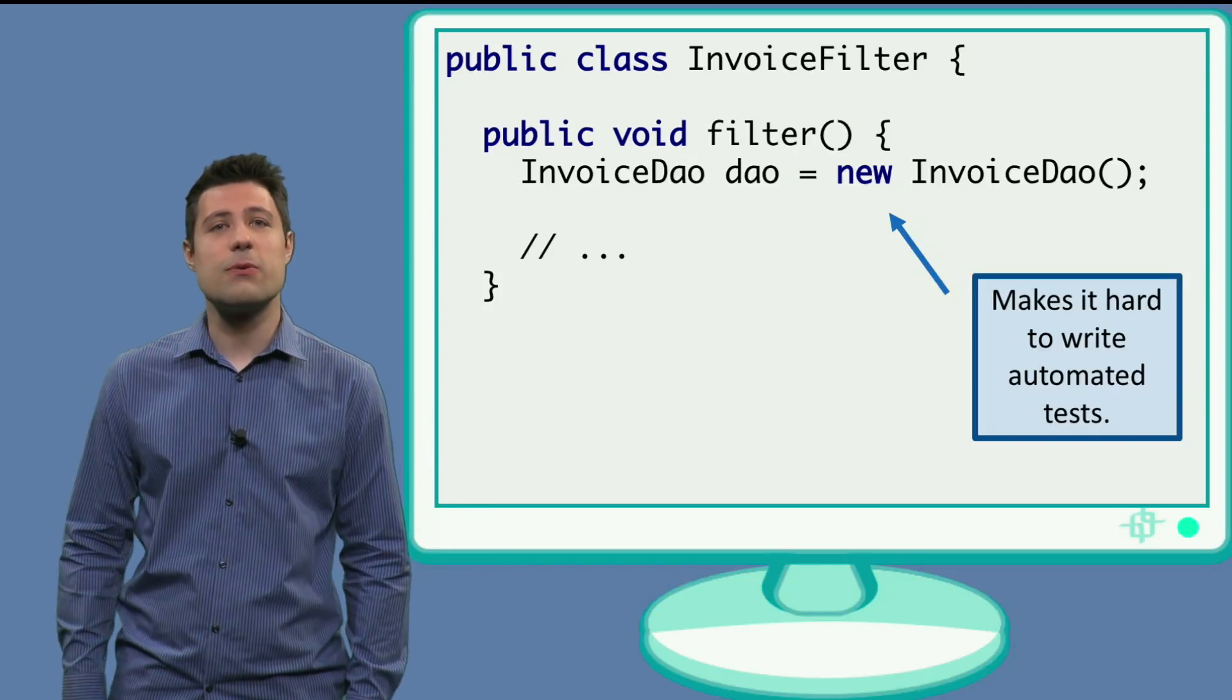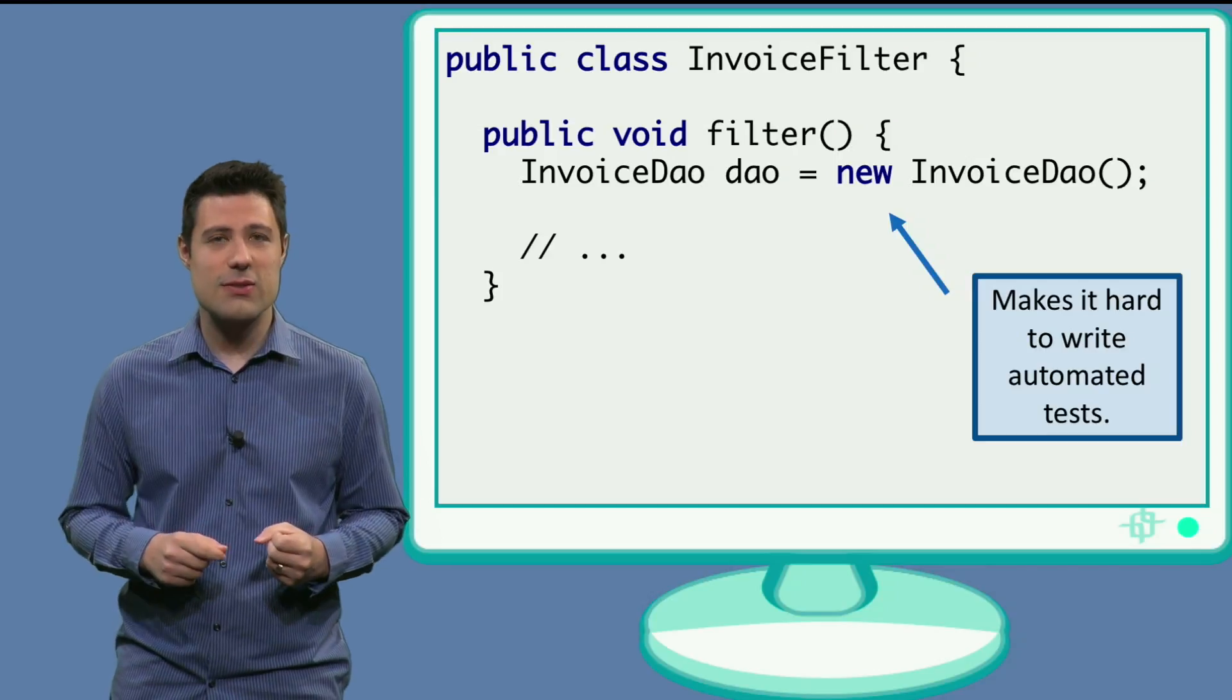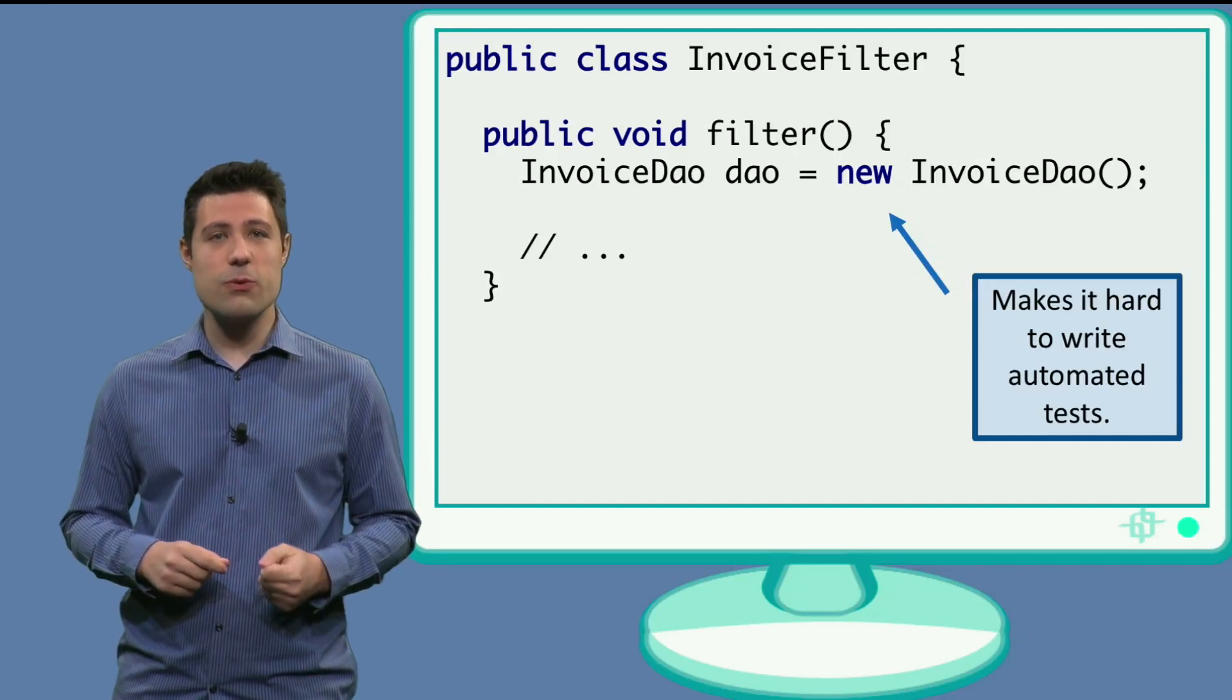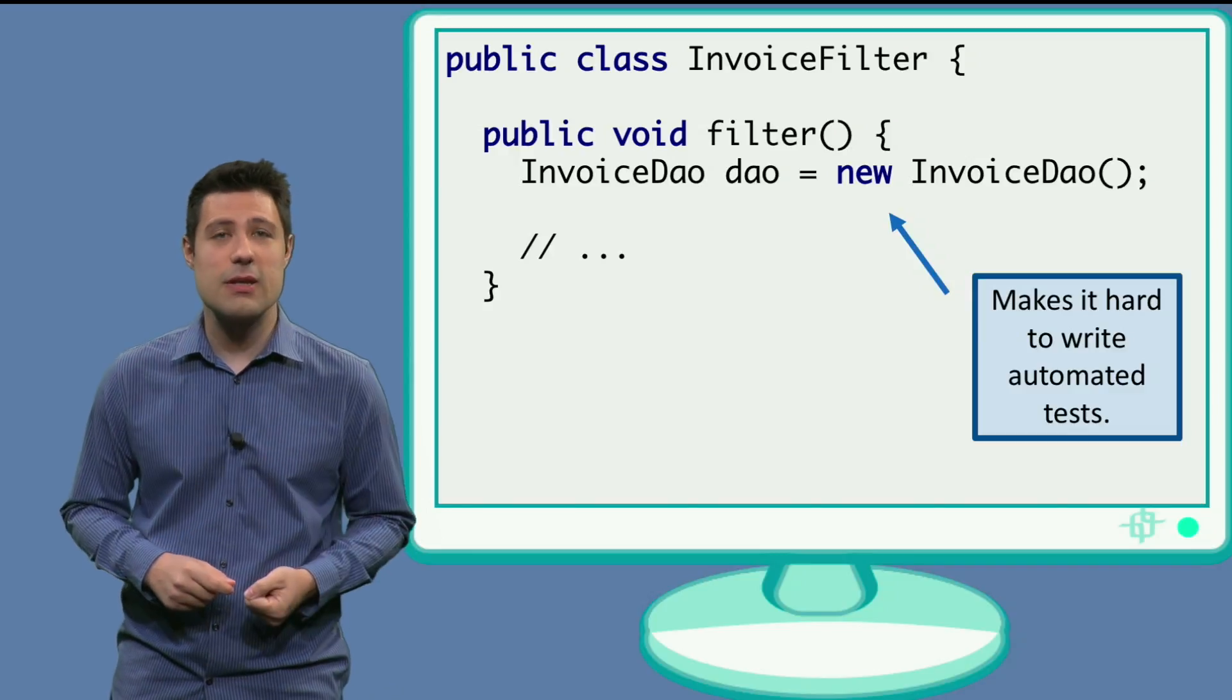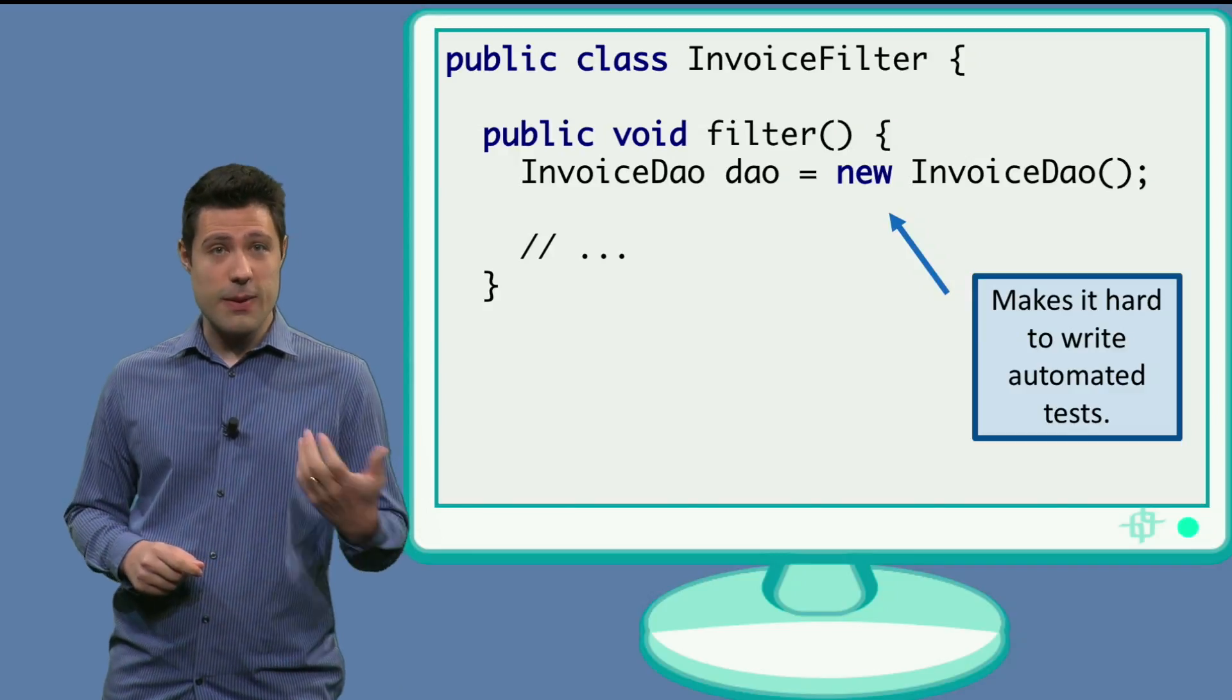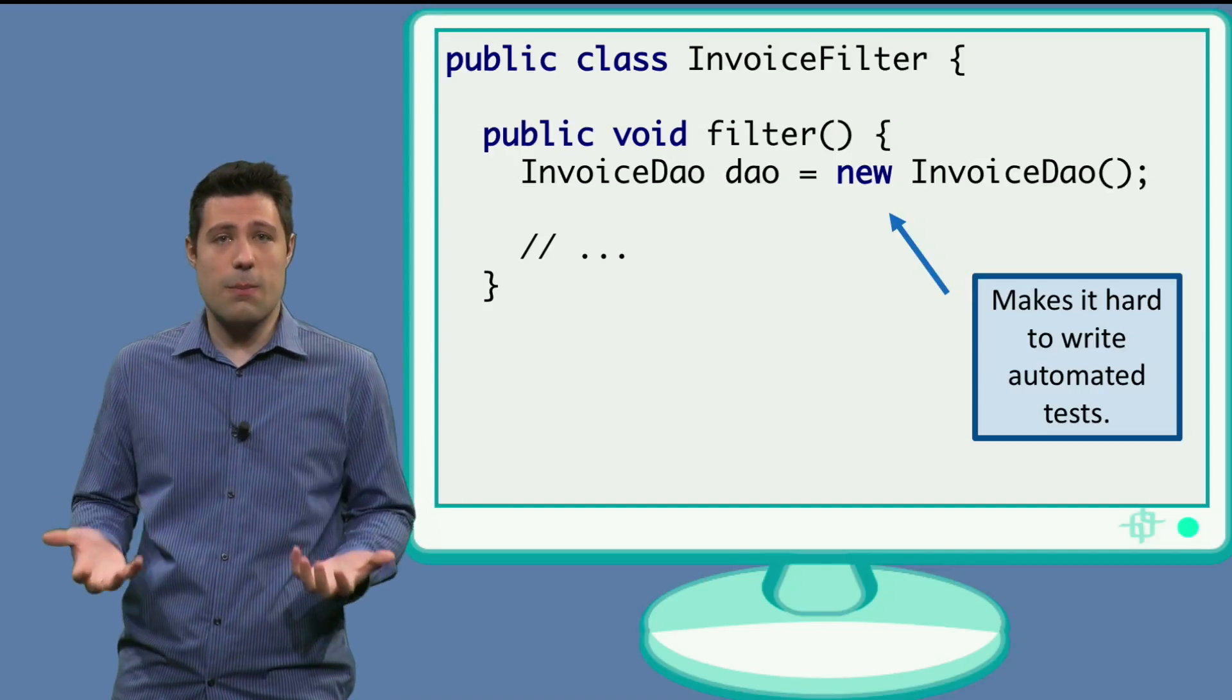Another important tip towards testability is about how classes handle their dependencies. One traditional way of programming, and we actually did this in our very first invoice filter implementation, was that if a class has a dependency, it then just instantiates these dependencies and uses them.